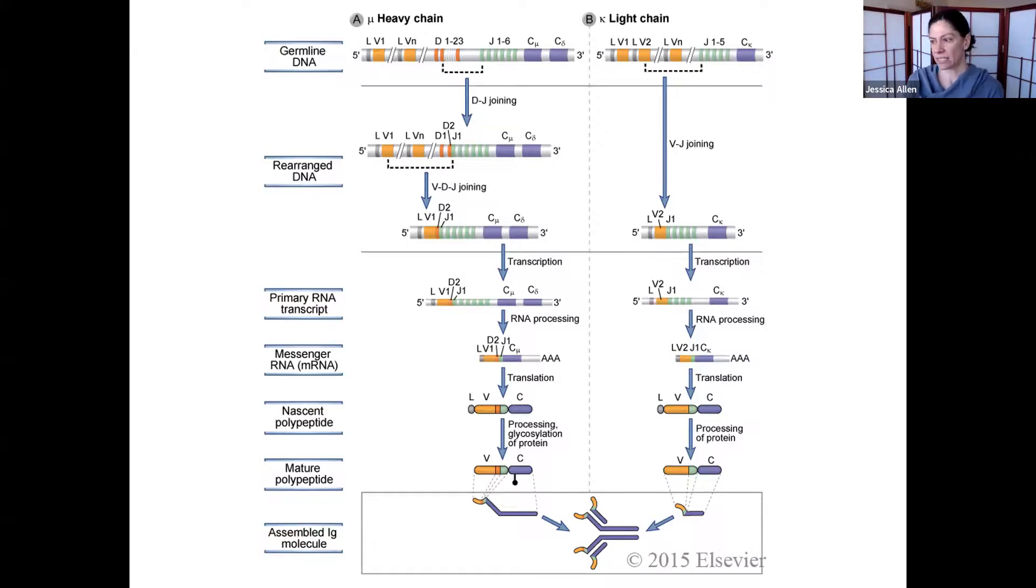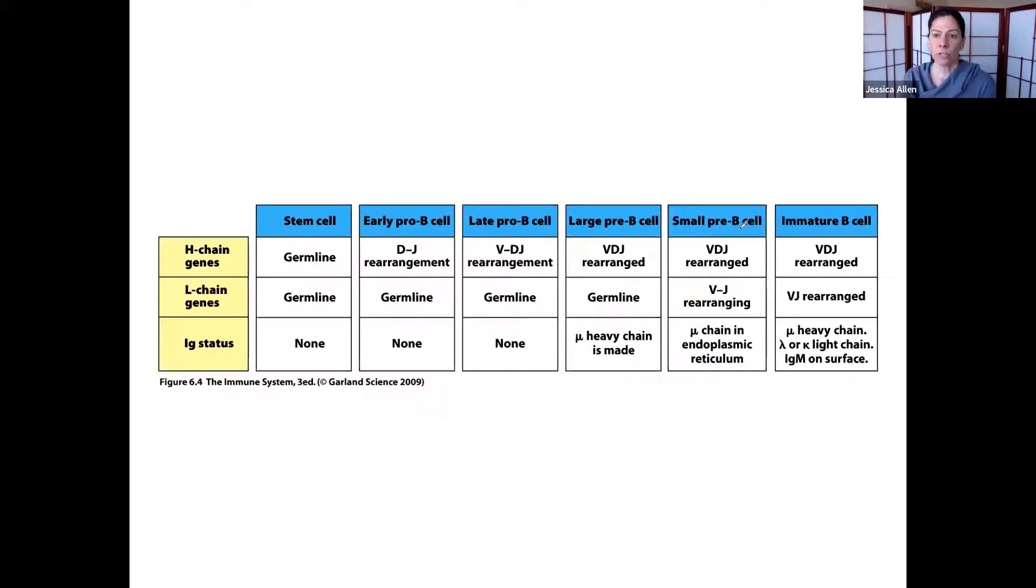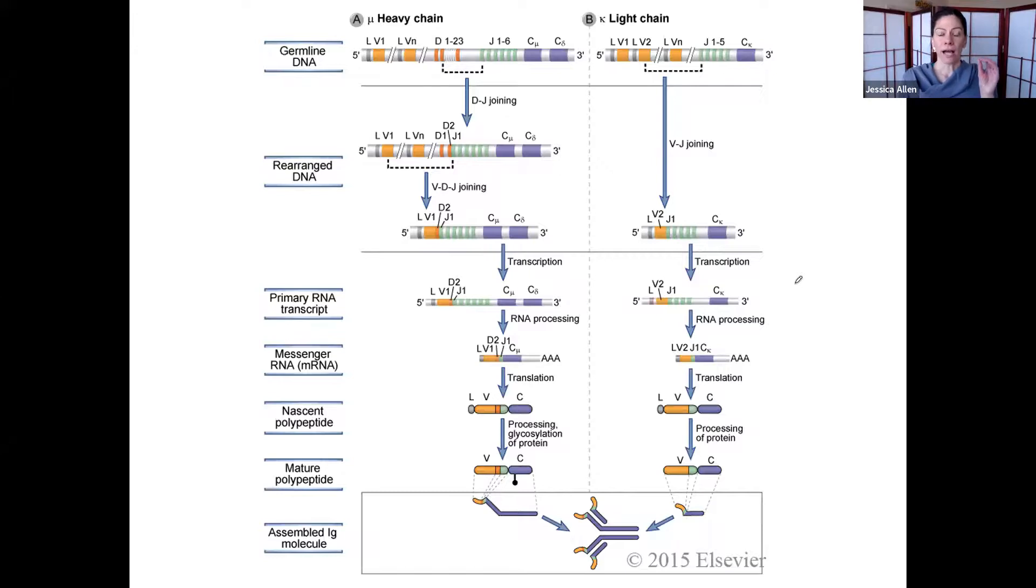What's nice about this is that we have a few more chances here. In order to make a light chain, we have two places in our genome that could potentially make light chain, kappa and lambda. So, we're going to start with one and move to the other.